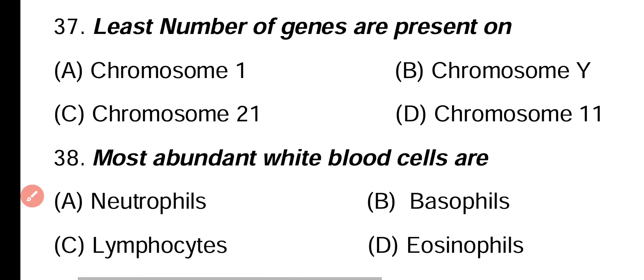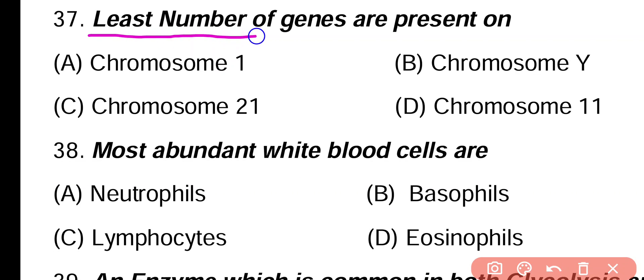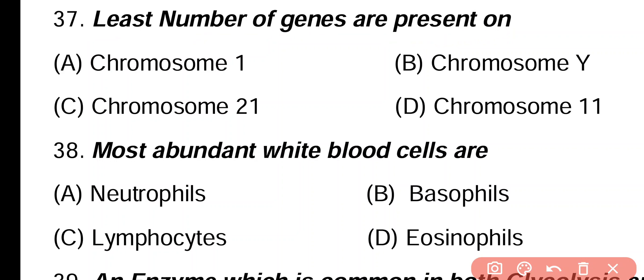Question 37. Least number of genes are present on chromosome: 1, Y, 21, 11. Correct answer is option B. The fewest number of genes are present on the Y chromosome, and the maximum number of genes are present on chromosome 1.